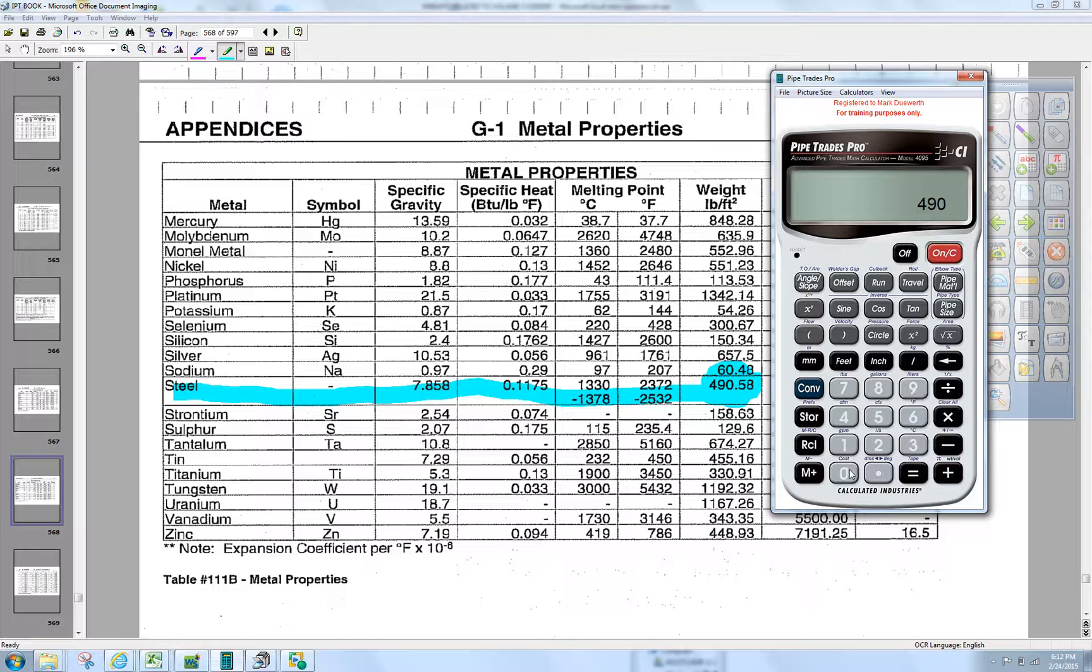We're going to override the factory settings by pressing store, and then the plus key also acts as weight and volume. So now the calculator is set up for 490 pounds per cubic foot. It's taken out of the water setting, the default setting.